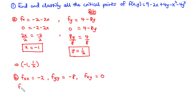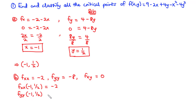Evaluating at the critical point (−1, 1/2): fxx(−1, 1/2) = −2, fyy(−1, 1/2) = −8, and fxy(−1, 1/2) = 0, since these are all constant terms.